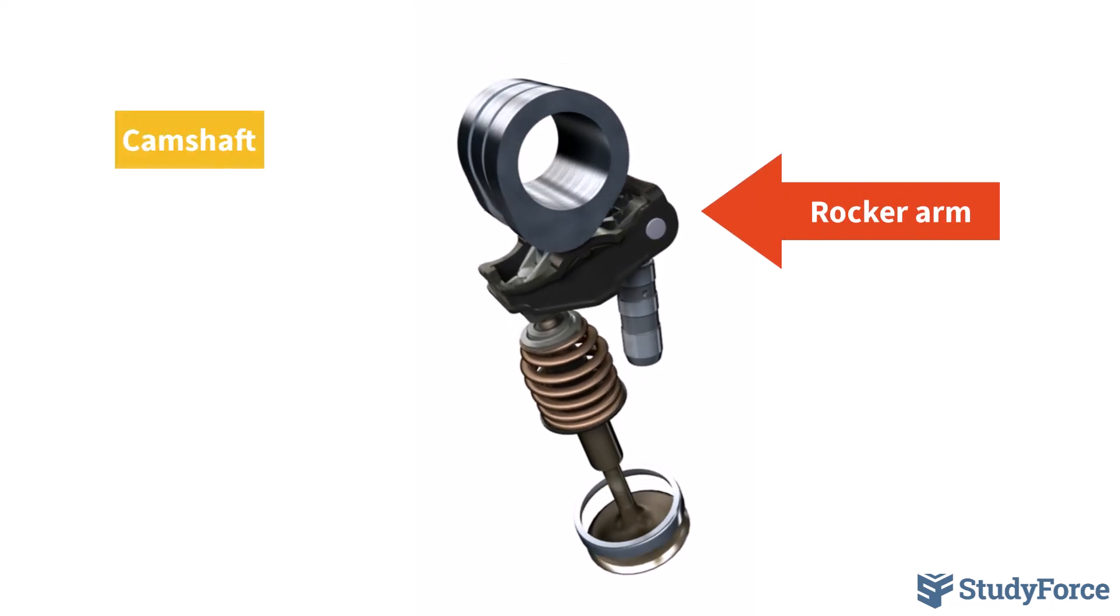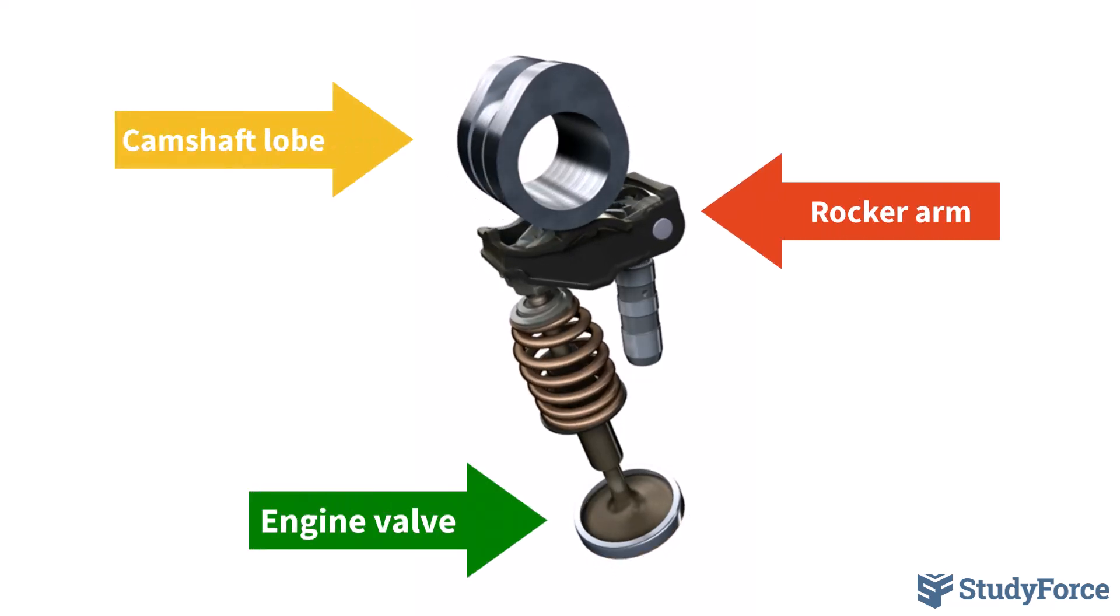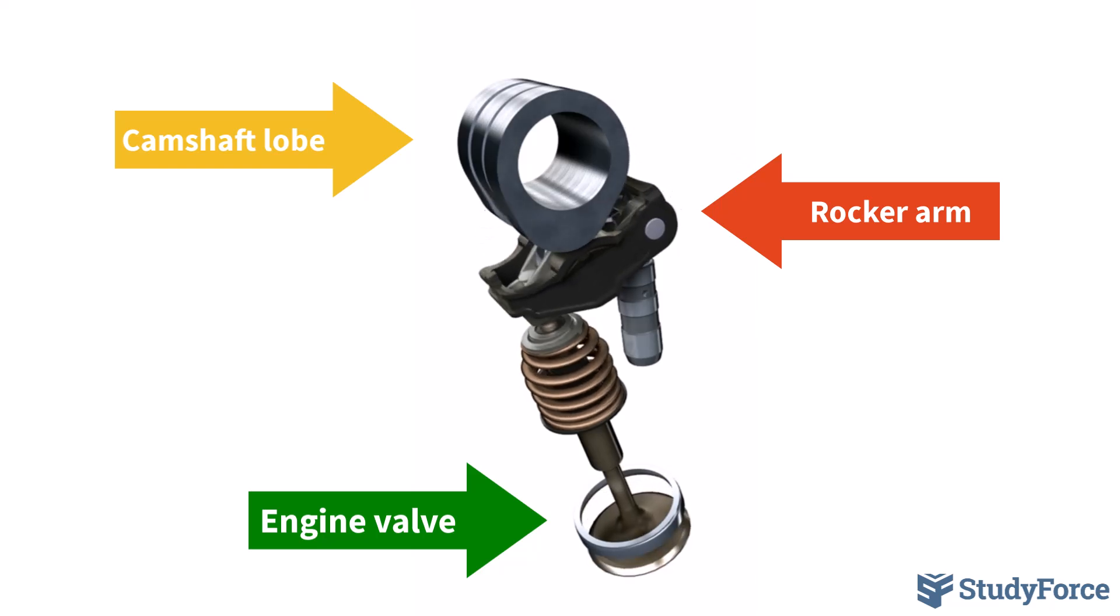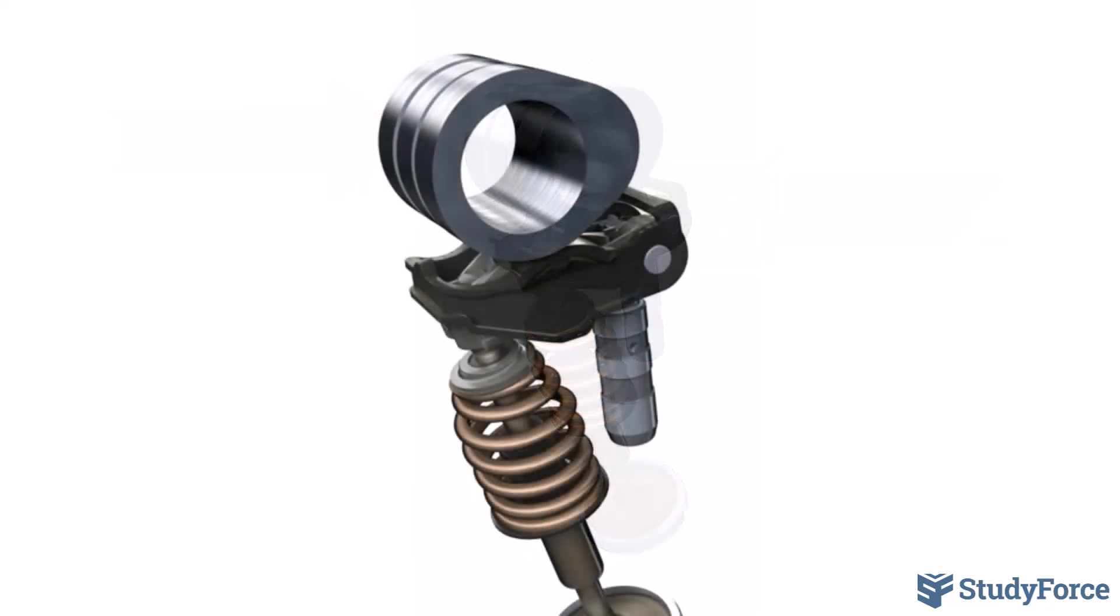The rocker arm transfers motion from the camshaft lobe to the engine valve. It typically pivots at the center, with one side connected to the camshaft and the other side connected to the valve.